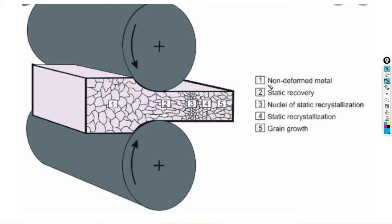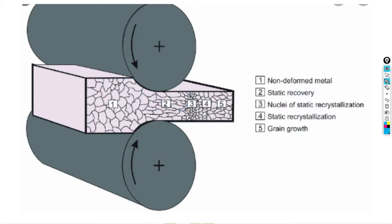Looking at the microstructure step by step: the first stage is non-deformed metal. In the second stage, called static recovery, the non-deformed metal is subjected to an extrusion force and the grains begin to collapse. In the third stage, the grains are completely shrunk.